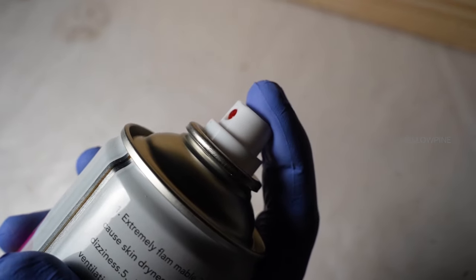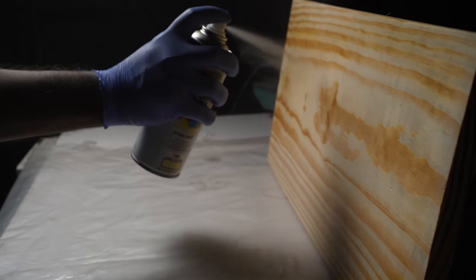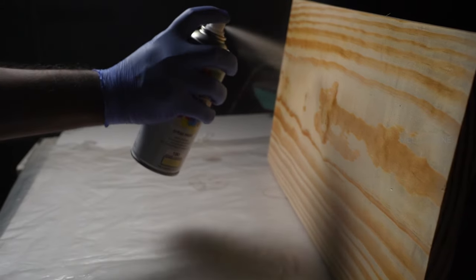If you only rarely need to spray polyurethane, consider using spray cans. They offer convenience and eliminate the need for thinning or filtering. Simply shake the can and spray directly onto your project.